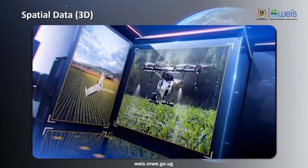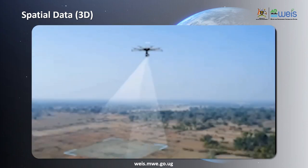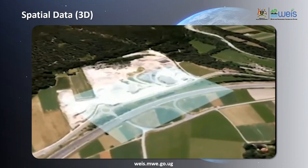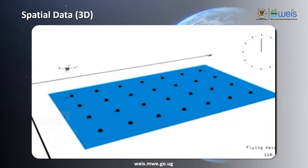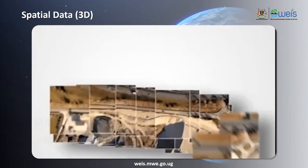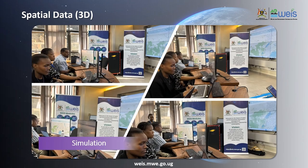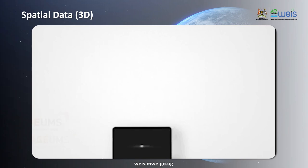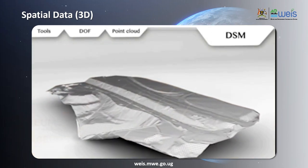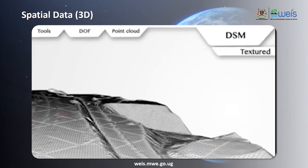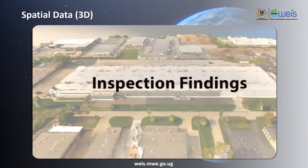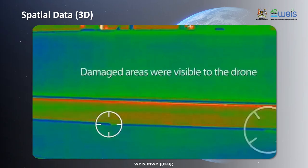WEEZ will enhance monitoring performance using drone-based data collection of raster images. These raster images shall be processed and used for 3D simulations and forecasting for preparation of knowledgeable products to support planning and informed decision-making. WEEZ revolutionizes the routine 2D monitoring and reporting on the state of the wetlands, forests, and water resources infrastructure like dams, rivers, and water facilities, among others.